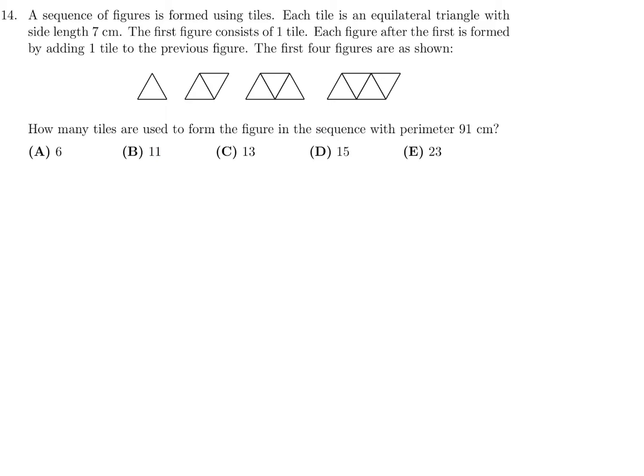A sequence of figures is formed using tiles. Each tile is an equilateral triangle with side length 7. The first figure consists of one tile. Each figure after the first is formed by adding one tile to the previous figure. The first four figures are shown. How many tiles are used to form the figure in the sequence with perimeter 91?